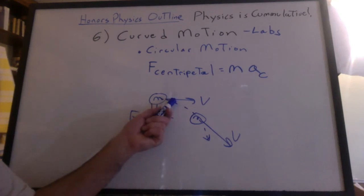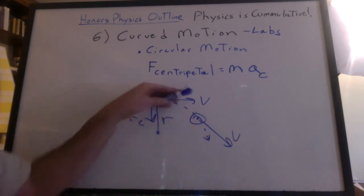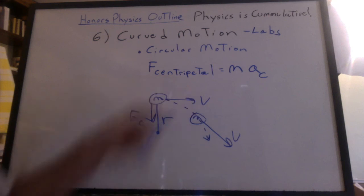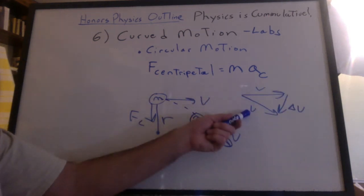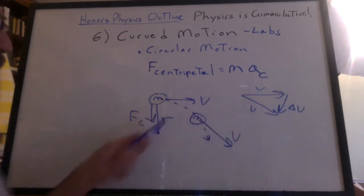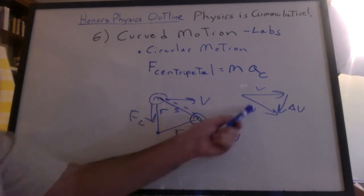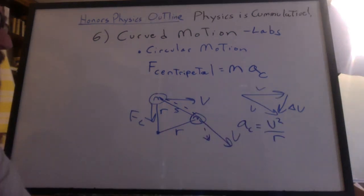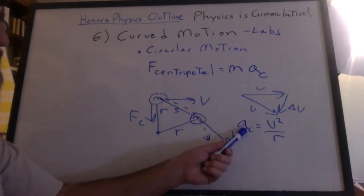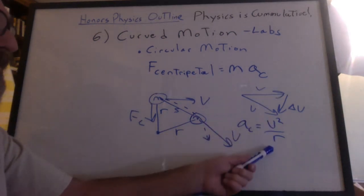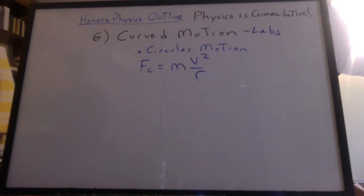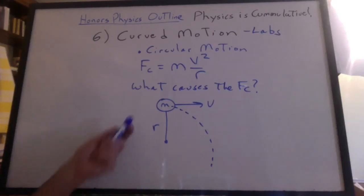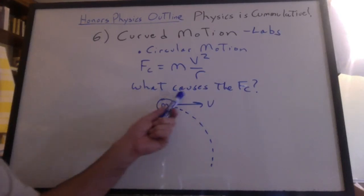A force causes an acceleration. If it's towards the center, the acceleration is towards the center. It's an acceleration not due to a change in speed, but due to a change in direction. We put the velocity vectors tail to tail and found that the change was towards the center. We used similar triangles between the radius and the velocity and found the centripetal acceleration to be equal to the velocity squared over r. That gave us Fc equals m v squared over r. So whenever we see an object moving in a circle, we have to ask ourselves, what causes the Fc?